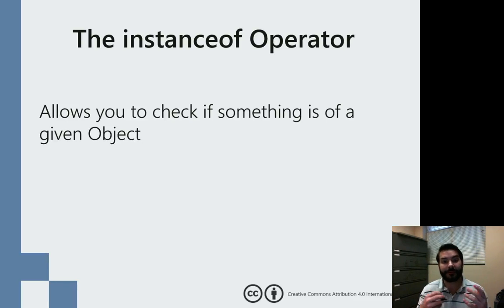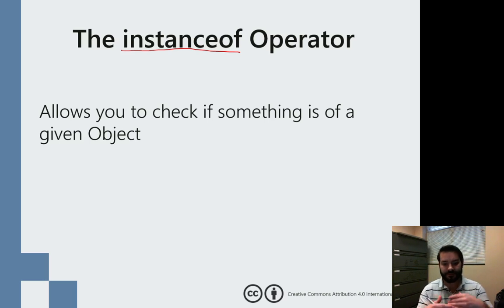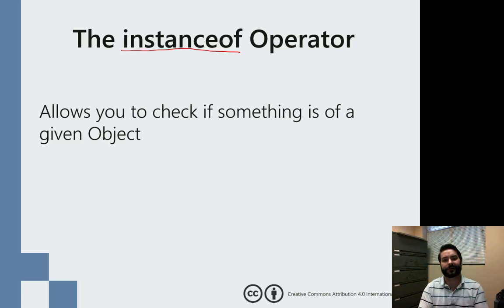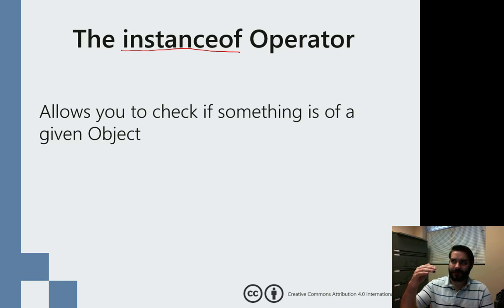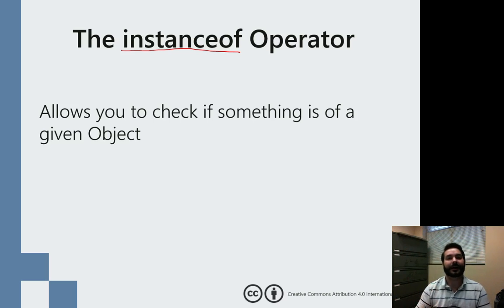One of the things that I am able to do is something called instanceof. Since we're able to put any kind of object in its hierarchy, what we can do is double-check to make sure that something — some object, some data, some variable I've made — is of a particular object.